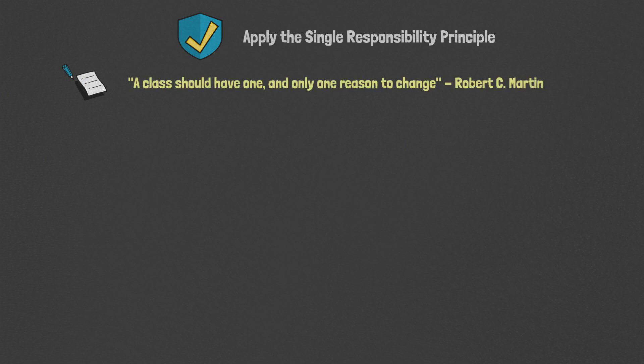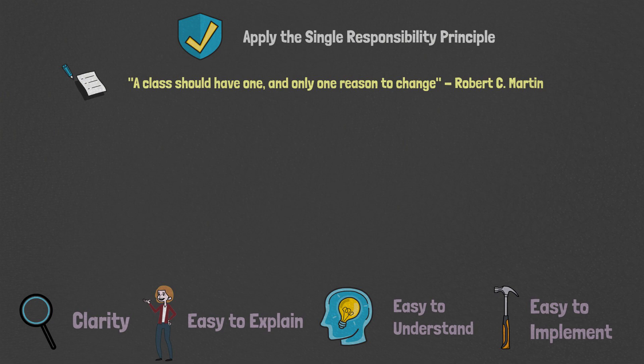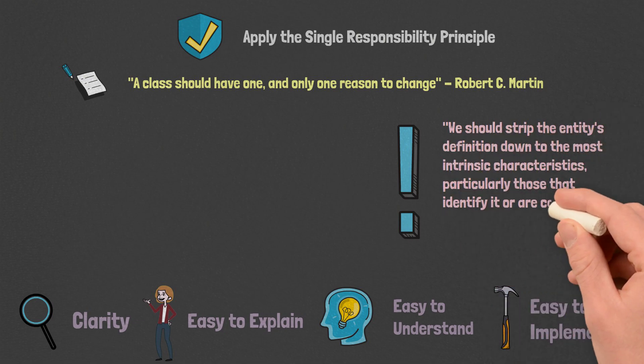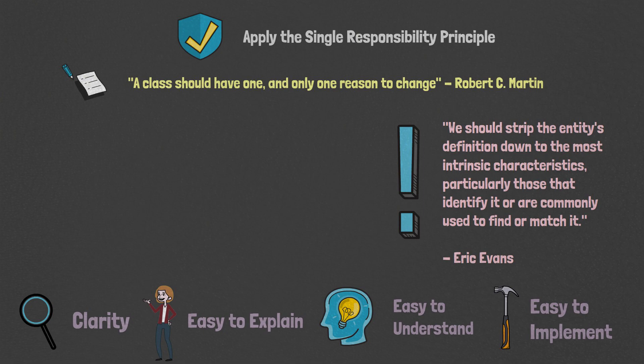Apply the single responsibility principle to entity modeling. Robert C. Martin defines the single responsibility principle as: a class should have one and only one reason to change. By thinking of our entity modeling through the lens of the single responsibility principle, it provides clarity to the entity. It makes it easier to determine what should naturally be part of the entity and what should be put elsewhere, and makes our entities easier to explain, understand, and implement. Evans states that we should strip the entity's definition down to its most intrinsic characteristics, particularly those that identify it or are commonly used to find or match it.